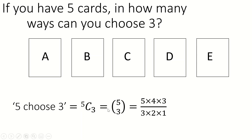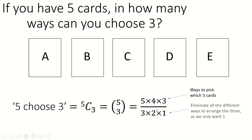So in summary, five choose three is five times four times three on top — which is the number of ways you can pick a selection of three cards — and then you divide by the number of copies of those three cards that you've chosen. And this is how my calculator works out five choose three. Because five times four is 20, times three is 60. Divided by six is 10, which is what the calculator gave us.